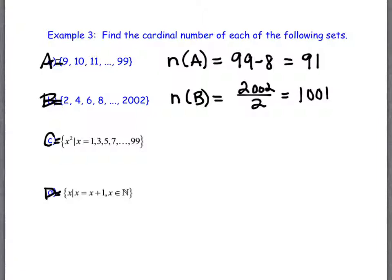Now, C and D look different. They don't look like a listing method. In fact, they're not. They actually look like that set builder method that we did last time. So what it might be helpful to do for C is to actually write out the items that are in our set. So on C, it says that the items in our set are x² when x are the numbers 1, 3, 5, 7, and so forth.